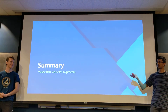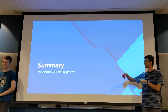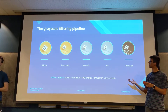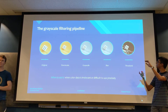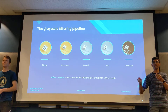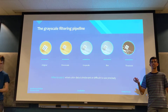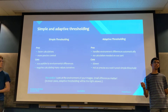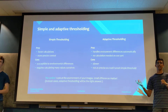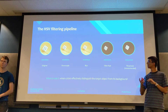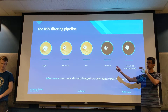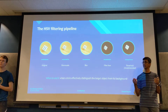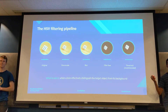Quick summary of everything so far. For grayscale filtering: start with an original image, downscale it, grayscale it, blur it, then apply a threshold. Use this when color data isn't relevant or is hard to use precisely. Simple thresholding is faster and more precise, but adaptive thresholding handles environment differences automatically. For HSV filtering: start with the original image, downscale, blur, separate out the hue of your target, and optionally threshold at the end. Use HSV when color will effectively separate your target object from the background.